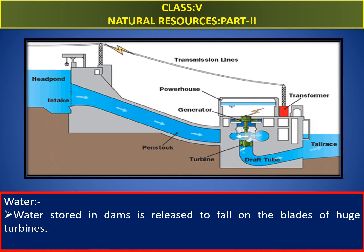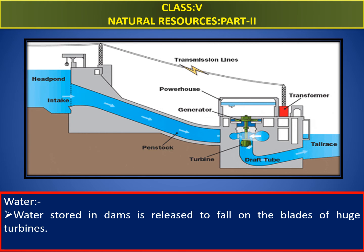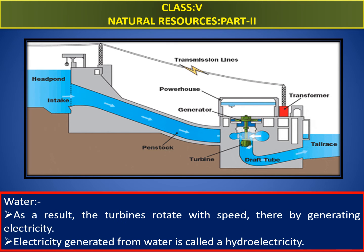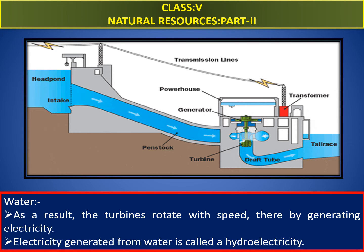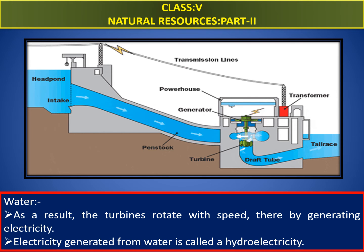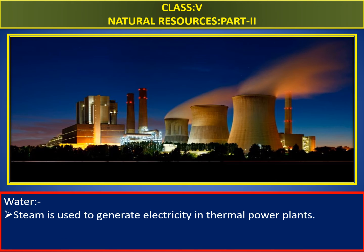Water is also an important source of energy. We should store water in dams, and when we release it, it falls directly on the blades of huge turbines. As a result of the water force, the turbines rotate at speed, thereby generating electricity. Electricity generated from water is called hydroelectricity. Steam is also very useful to generate electricity in thermal power plants.